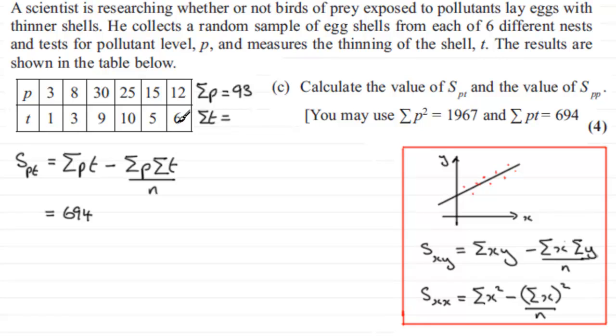And similarly, if you do Sigma T, just sum up the values in the bottom row here, you're going to get 34. So when it comes to this part, we've got minus Sigma P, which is 93, and that is multiplied by Sigma T, which is 34, and we divide by n. And n is the number of values that we've got in the table, the number of pairs. We've got six here. And when you work that out, what you should end up with is 167.